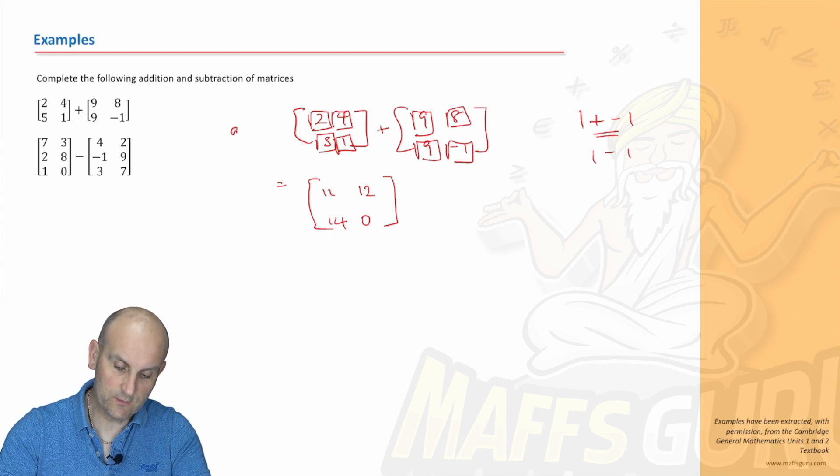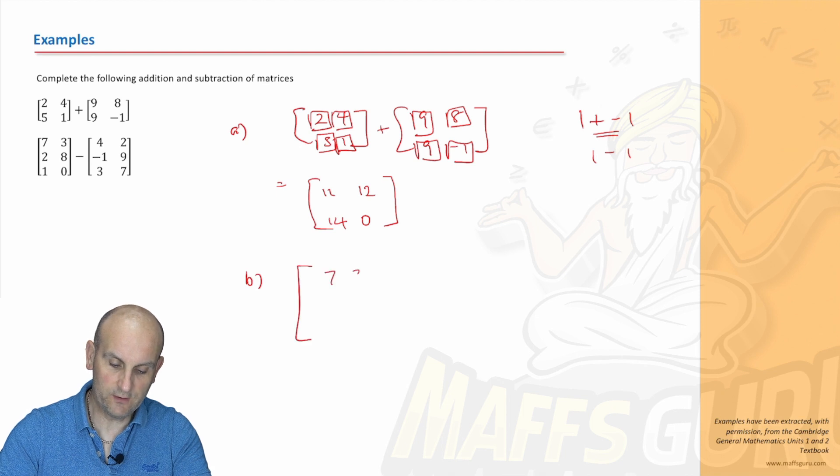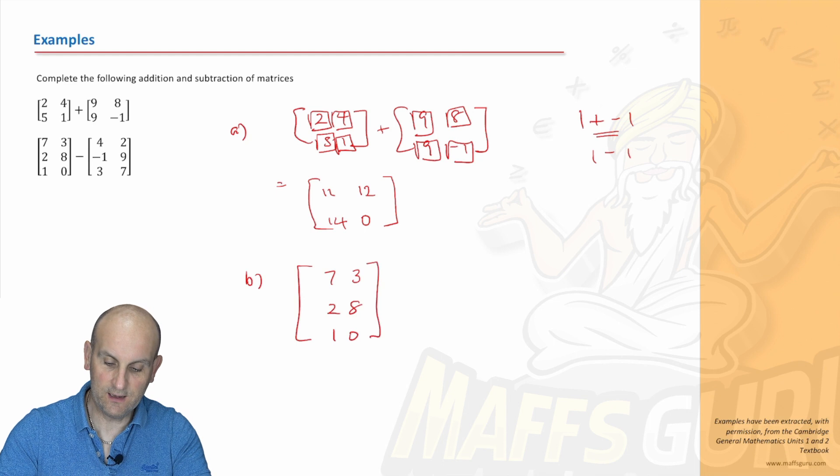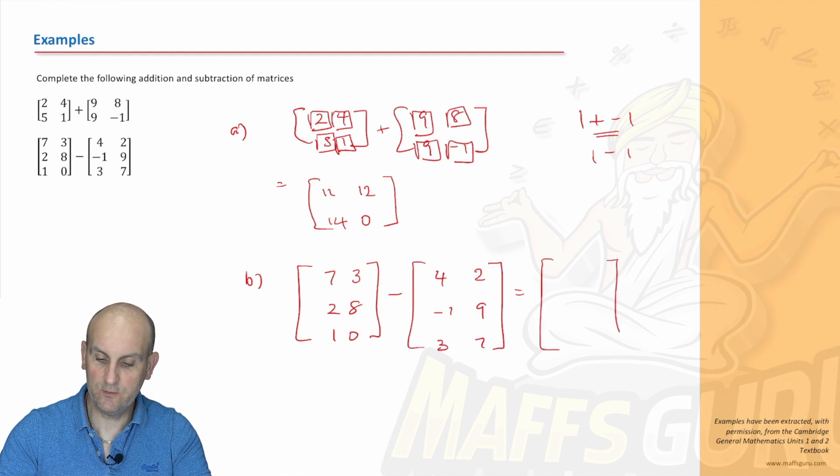It works in exactly the same way for the second one. Let's call that part A, let's call this part B. We've got seven three two eight one zero. Most people sadly make silly mistakes with these questions because they tend to add them even though that sign in the middle is a subtraction.